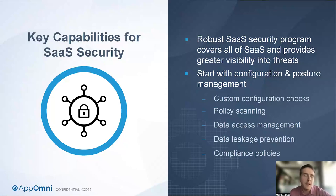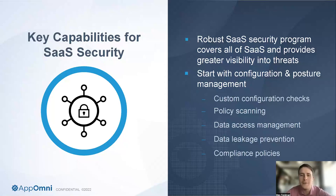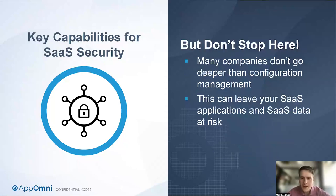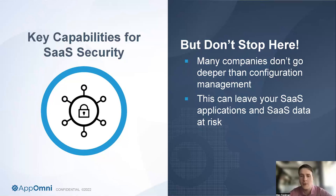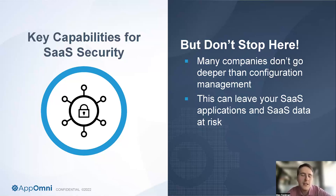Configuration and posture management are essential — they're necessary, but not sufficient for securing your entire organization. They're just some of the many capabilities necessary for a comprehensive security program. With configuration and posture management, you want custom configuration checks, policy scanning, data access management, data leakage prevention, and compliance policies — and all of those are still just a piece of the larger puzzle of securing your organization. A successful SaaS security program requires several additional components.